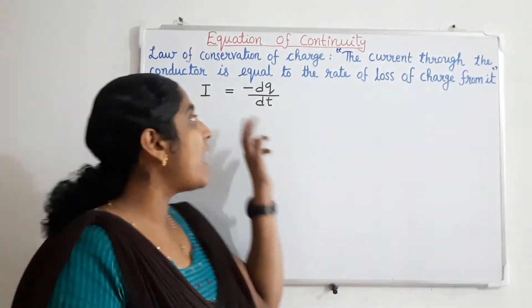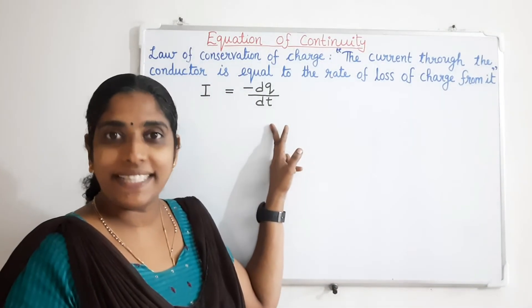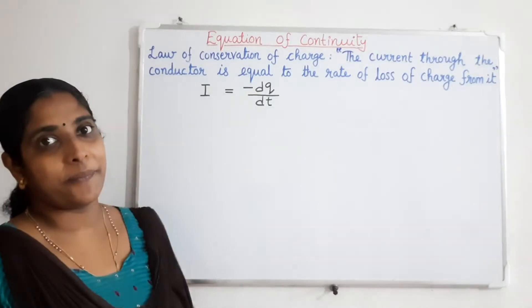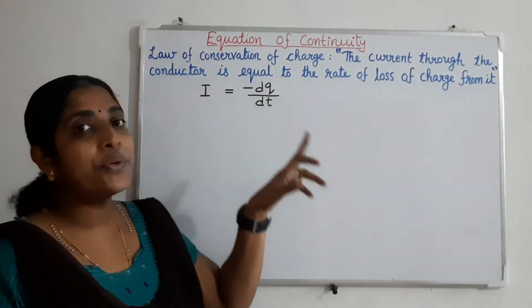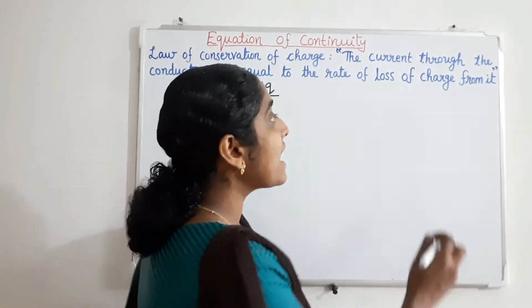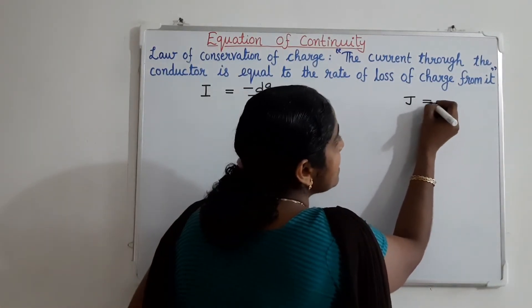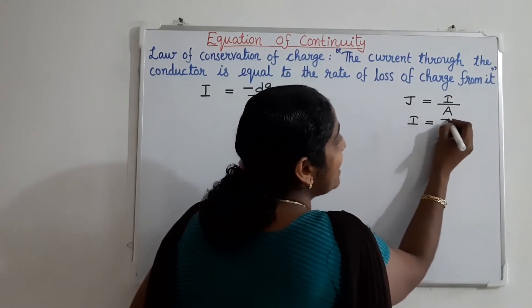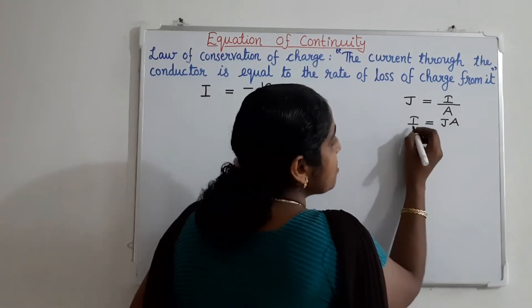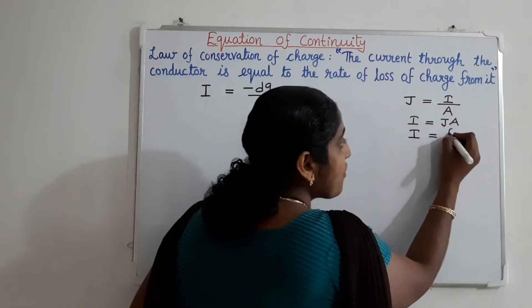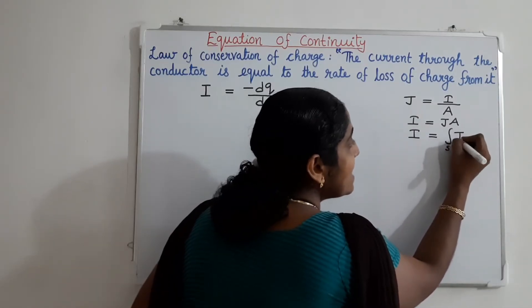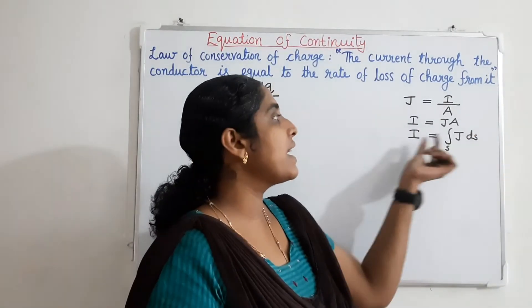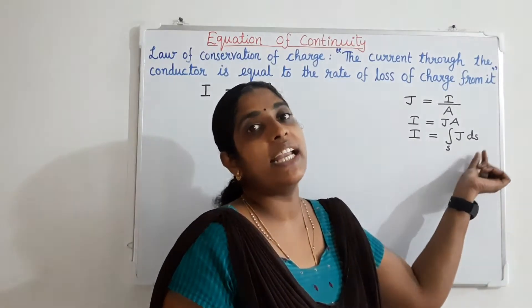Mathematically, we can write it as I = −dQ/dt. The physical quantities involved are charge Q and current I. We can write I and Q as integrals. Current density J is equal to current divided by area, so current I equals current density J times area. Therefore, we can write current as the surface integral of current density over a surface dS — the total current is the surface integral of J · dS.